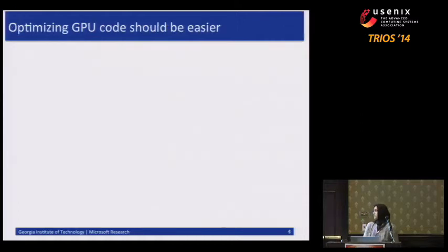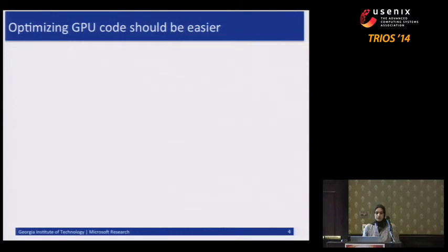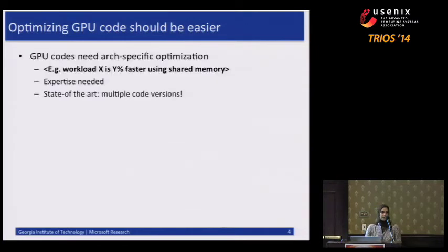The basic goal of this work is that optimizing GPU code is really hard today, and it should be and can be made easier through automation and runtime mechanisms. Why is it so hard? Because GPU codes usually require very architecture-specific optimizations.